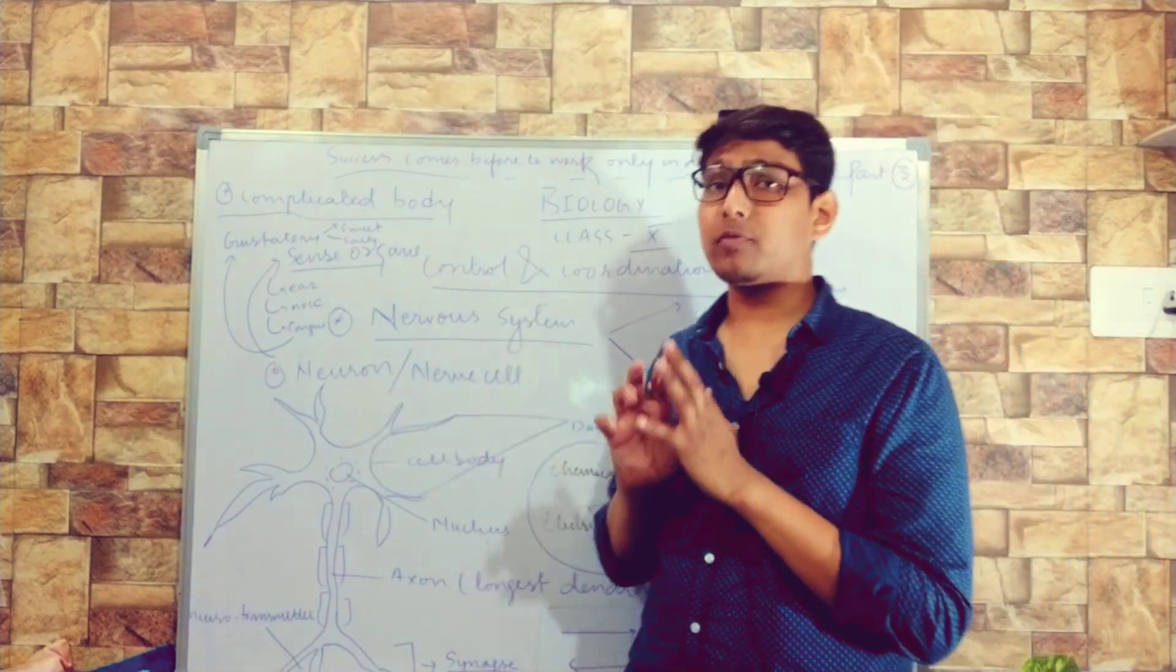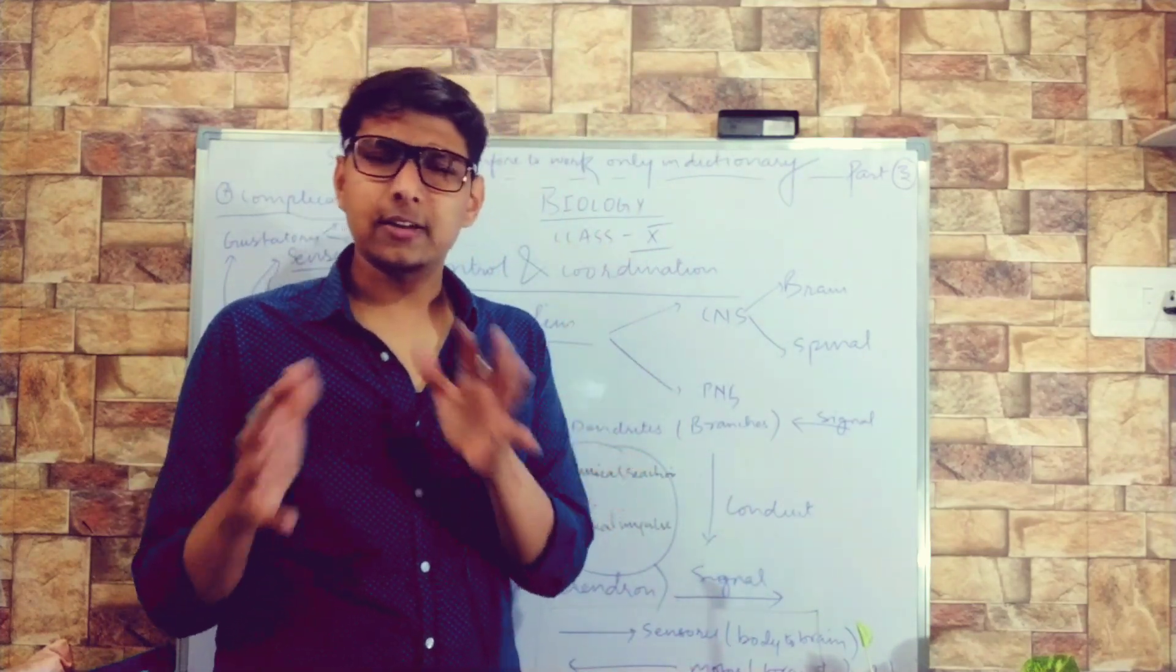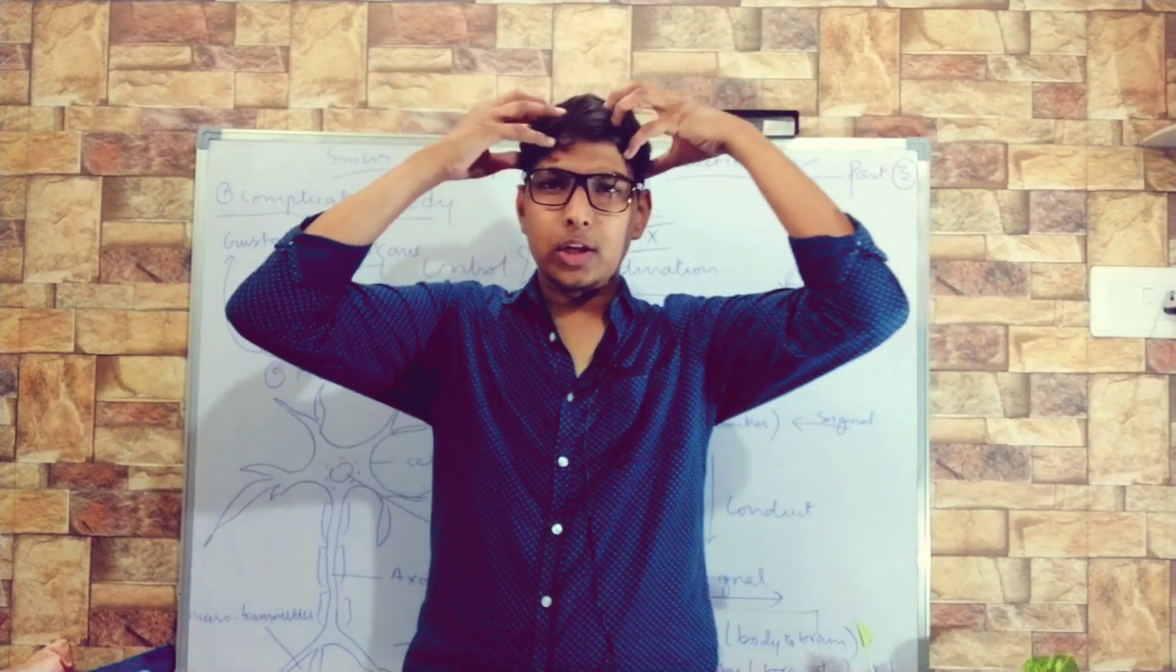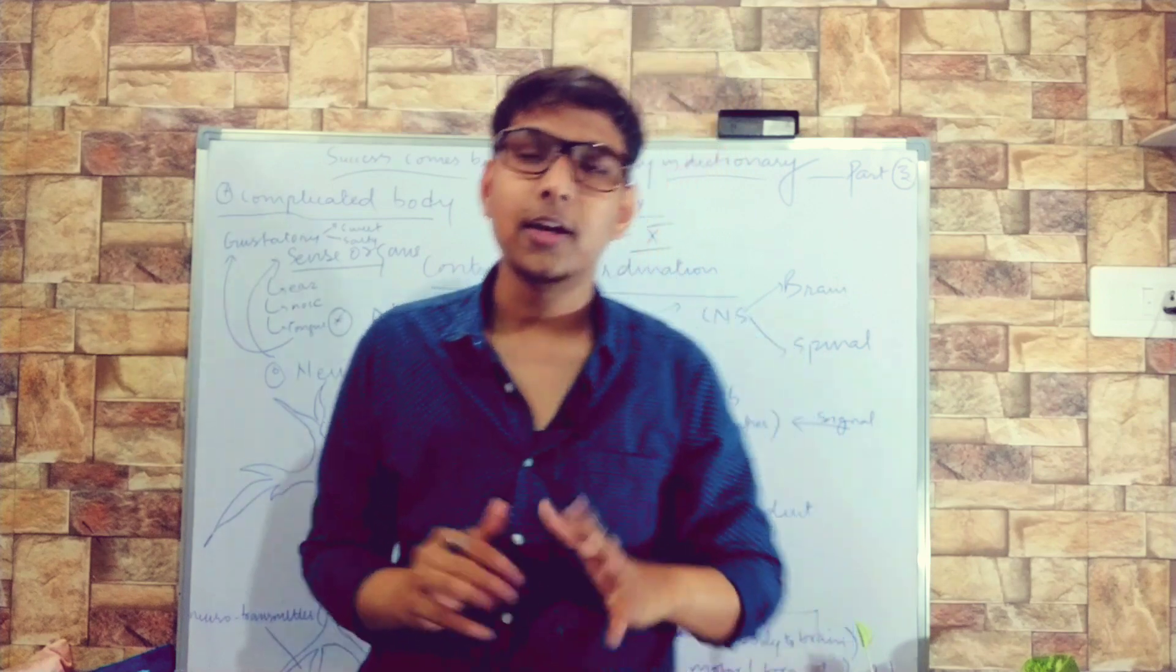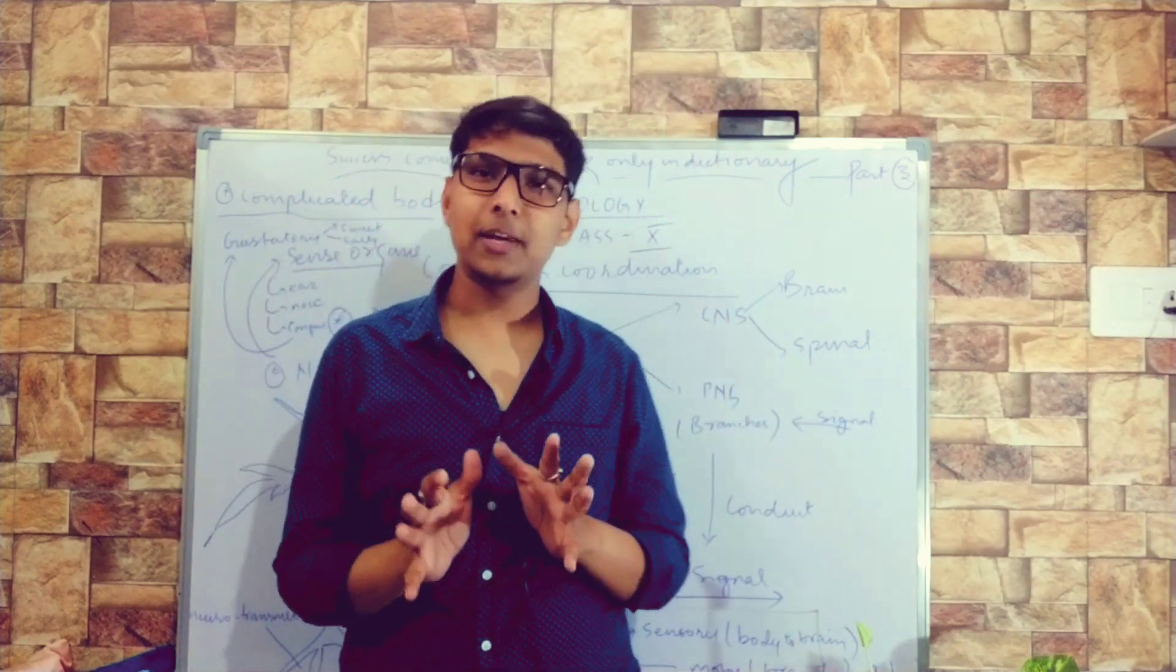This was all basics about neuron. Nervous system is very deep. Now we will study about the types of nervous system in our body. Not types basically. The nervous system in our body is divided into two basic parts: Central nervous system including your brain and spinal cord. Brain and spinal cord is central nervous system.